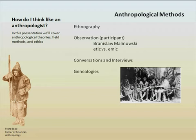We also use genealogies, where we learn about kinship, family, and marriage from gathering genealogical data. Later in the quarter we'll actually construct some kinship diagrams, so we'll work a bit with genealogy. We also do life histories, which is the personal history of an individual. This differs from an informant — an informant tells us about the culture as a whole, whereas a life history is an individual person's life. It can give us insights into perceptions, and to get a more holistic picture we collect several life histories.